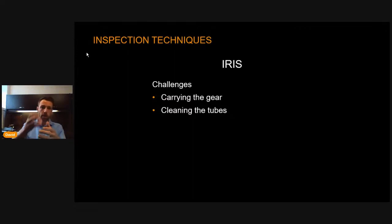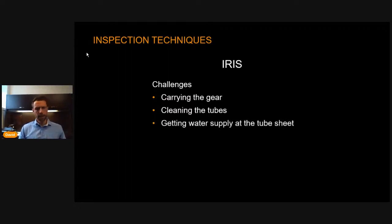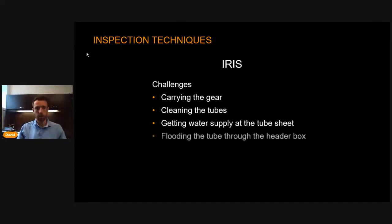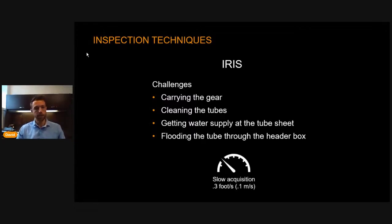We need clean water — if there are debris, scale, or deposits, this influences the UT results as the signal is triggered by those pieces in the water. To flood the tubes, bringing water all the way up to the catwalk and flooding the tube to the other box can be quite a challenge, especially when you don't have direct access. And IRIS is a slow technique — you need very precise pulling speed: about one-third of a foot per second, or 0.1 meter per second.